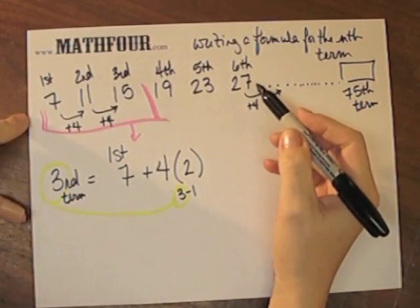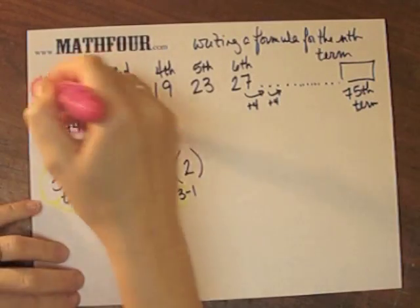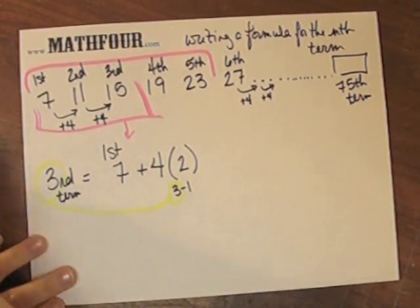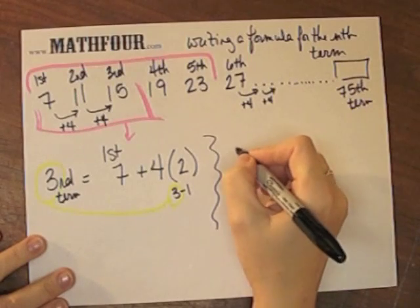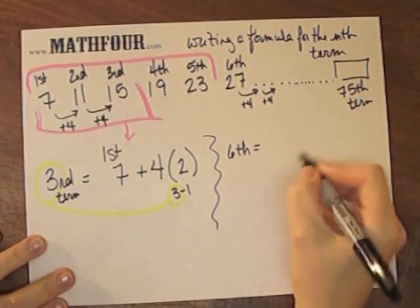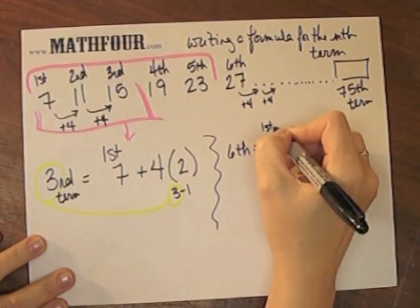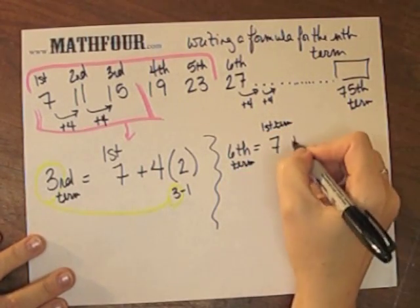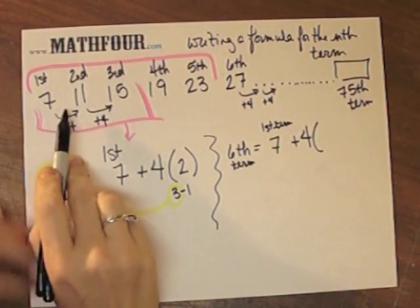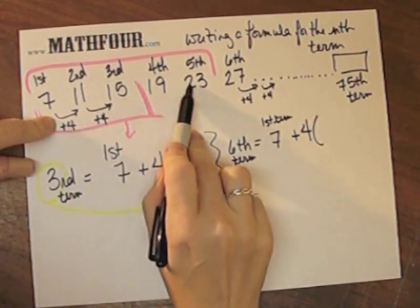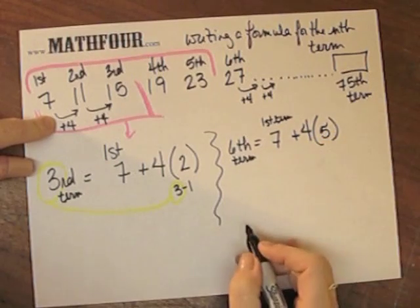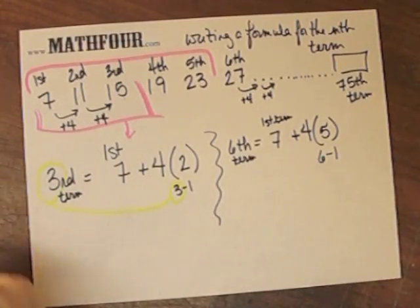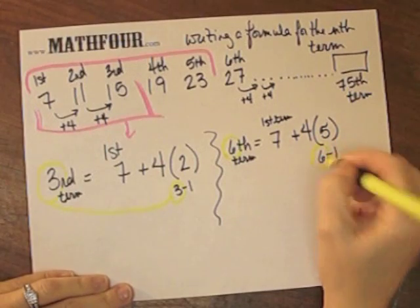So if we looked at it from the point of view of using maybe these 5 terms, we could say the 6th term is the 1st term plus 4 times, how many do we need? That's adding 1, 2, 3, 4, 5. Well, again, this 5 is 6 minus 1. So here's my 6th term, there's the 6.